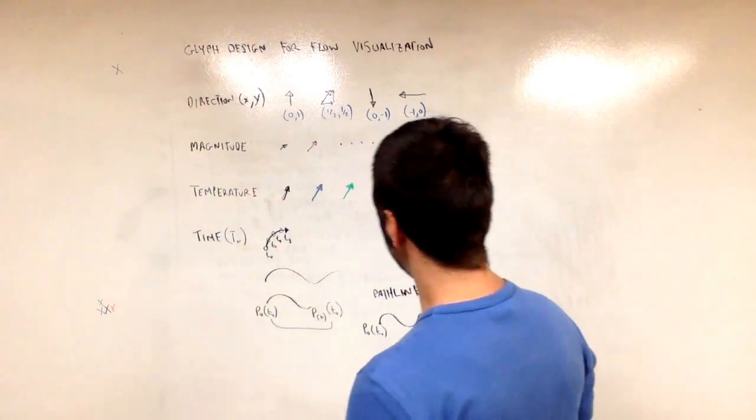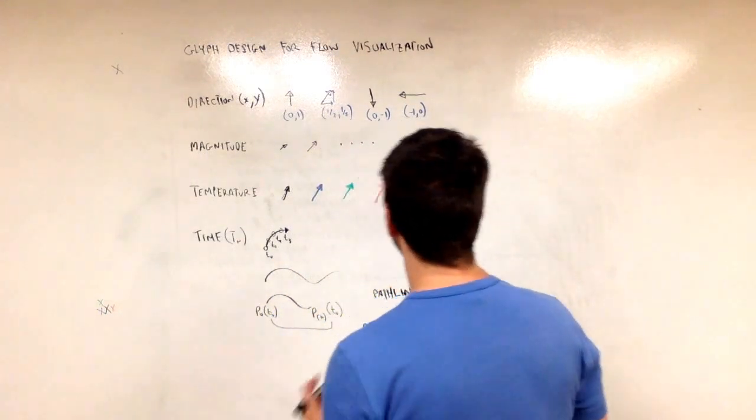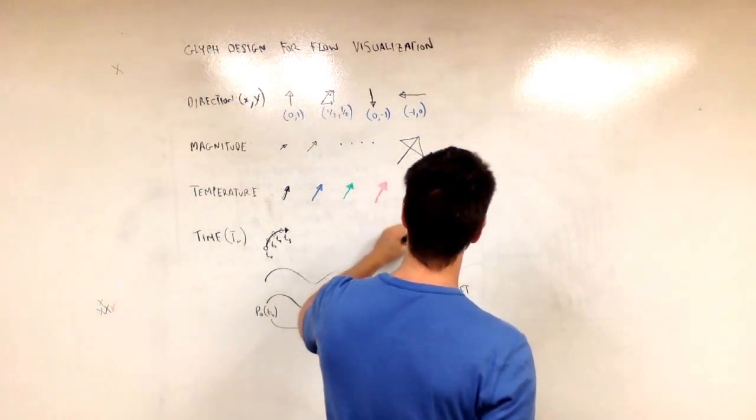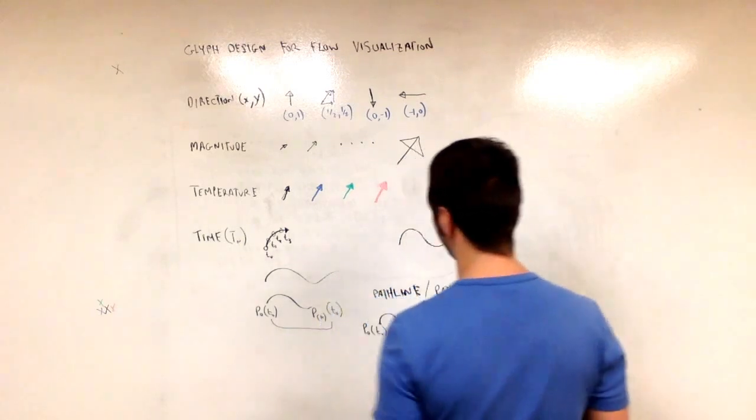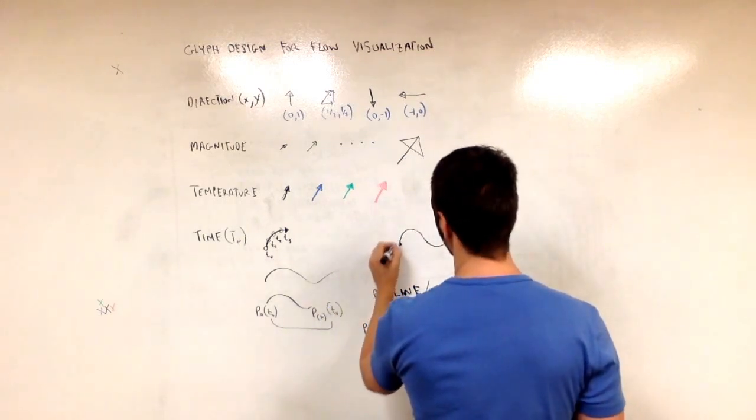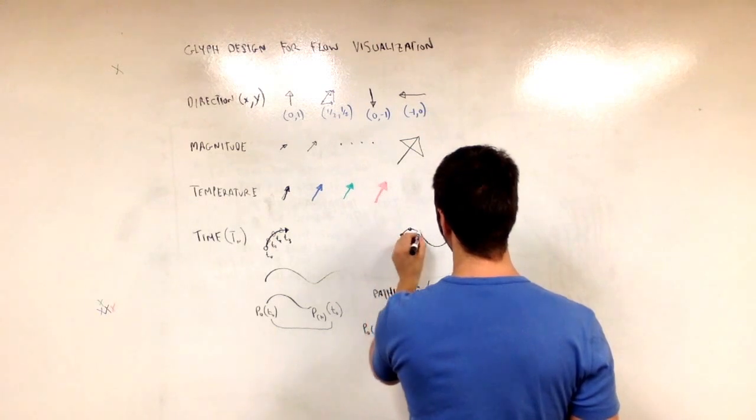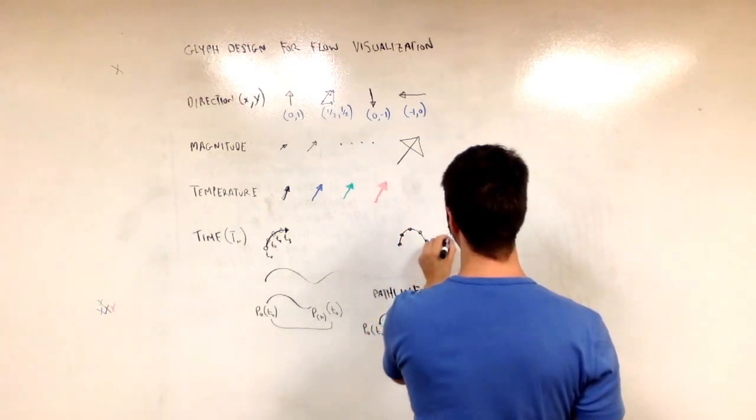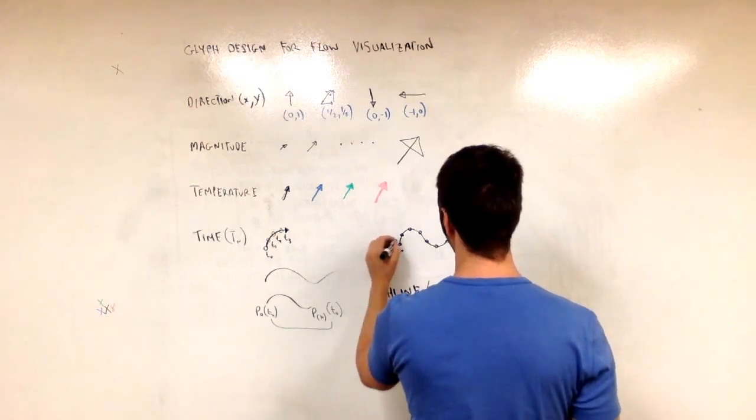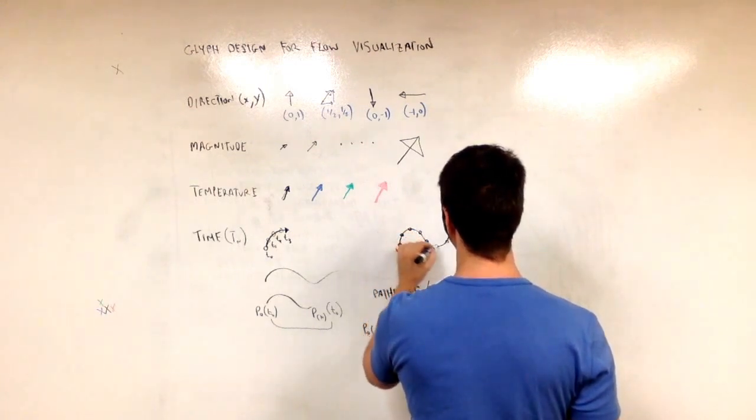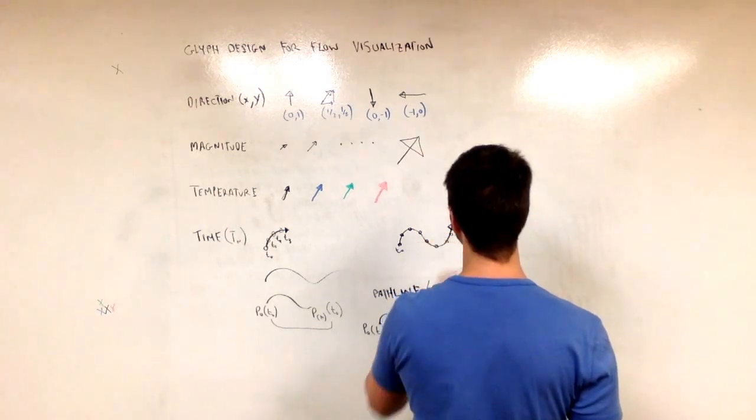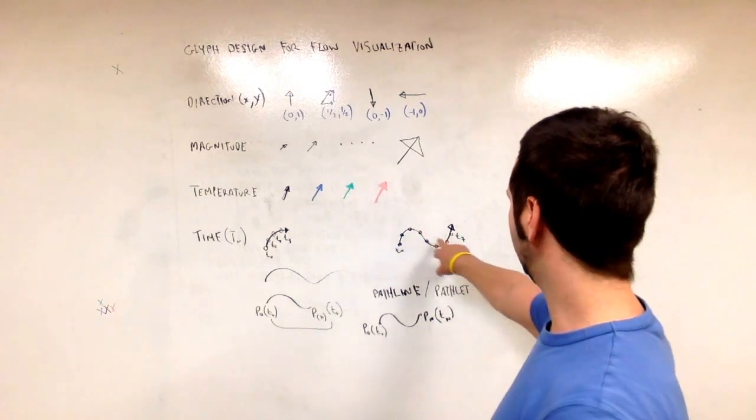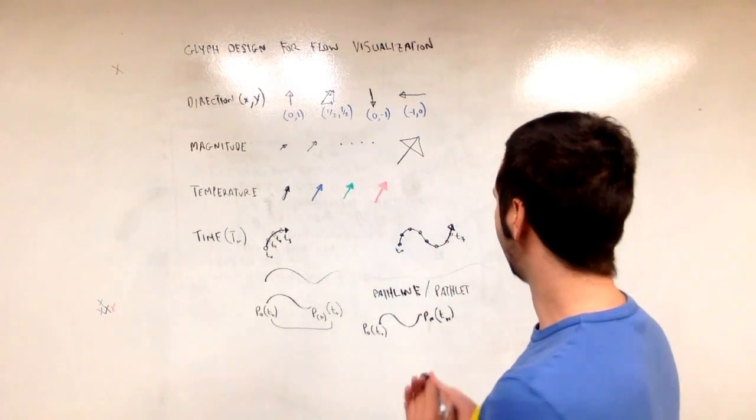And at the other end of the scale, we could have a longer pathlet. So we could have a pathlet that looks like this. And it encodes these time steps. In this case, we have t naught, and then we have one, two, three, four, five, six, seven, t7. So time step seven. So we have seven time steps encoded in the curvature of this pathlet.